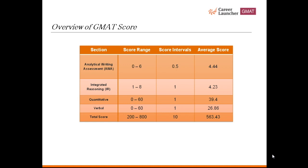Quant section is scored on a scale of 0 to 60 with intervals of 1. Average score in this section is 39.4. Verbal section is also scored on a scale of 0 to 60 with intervals of 1.